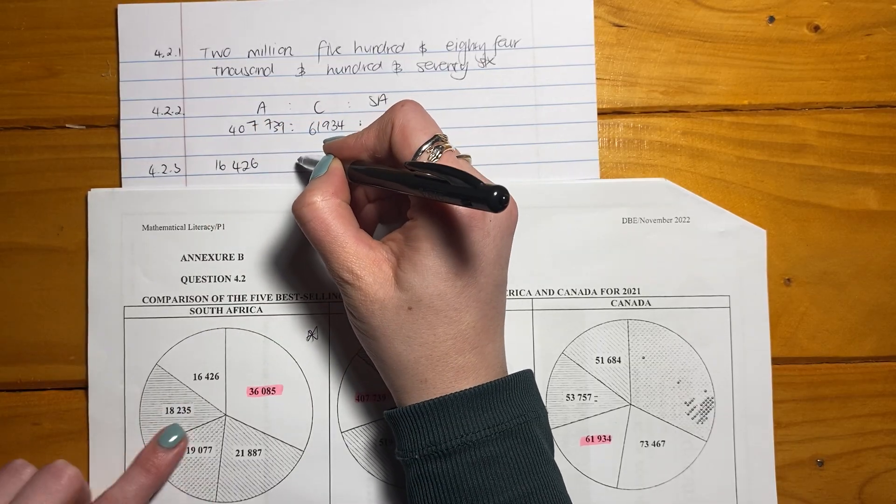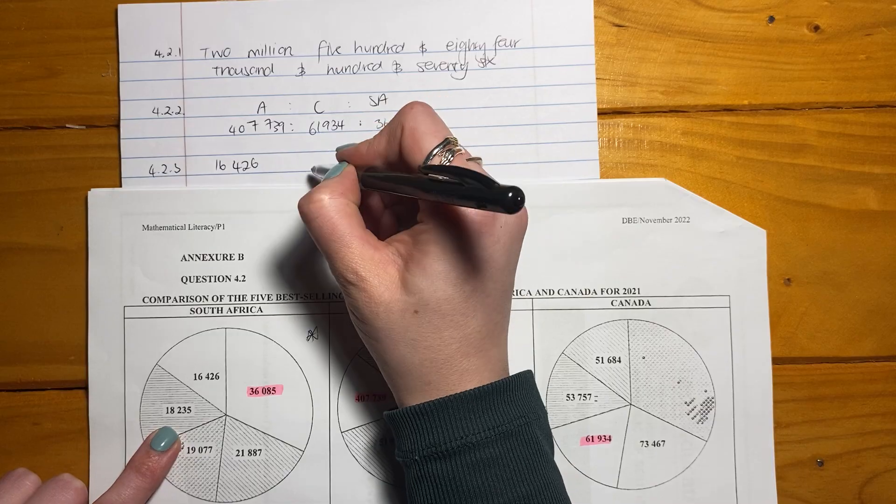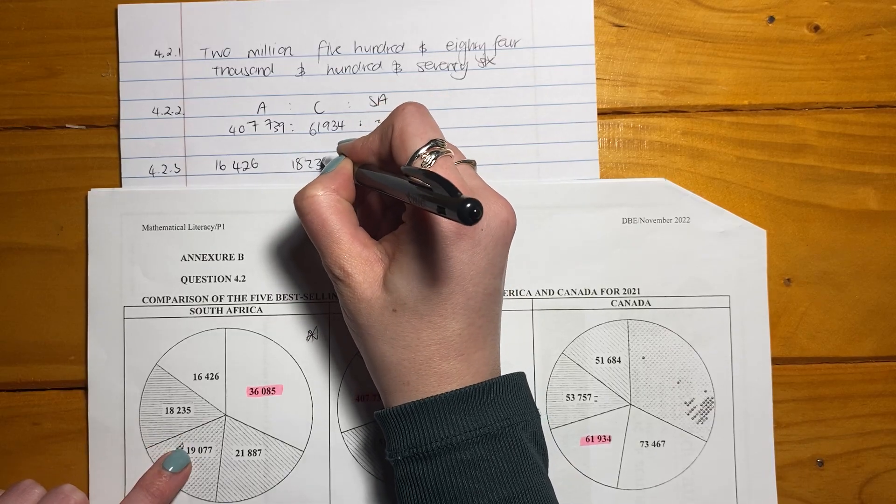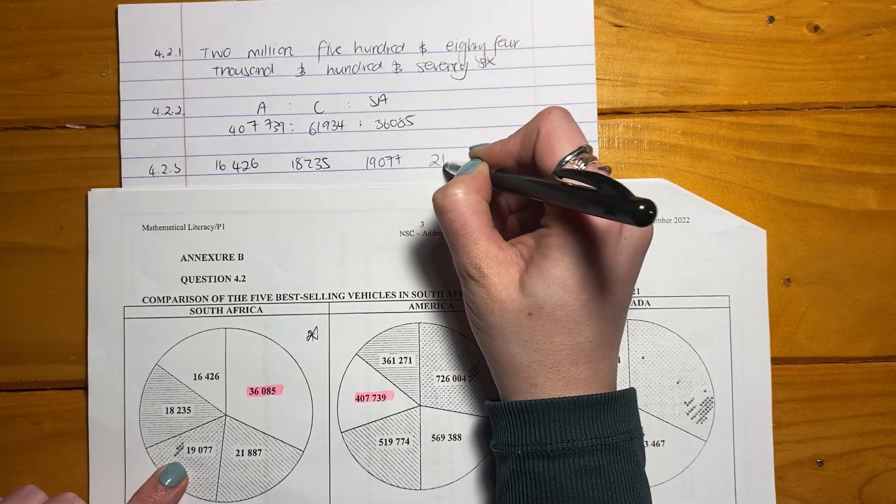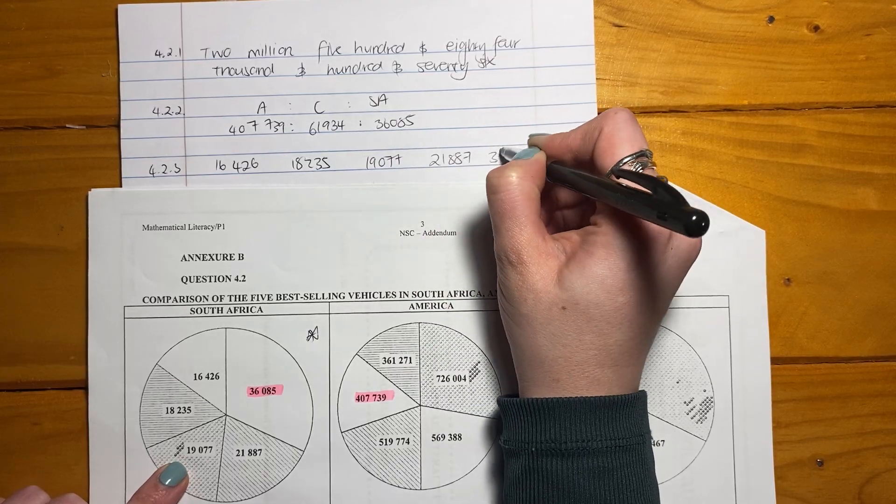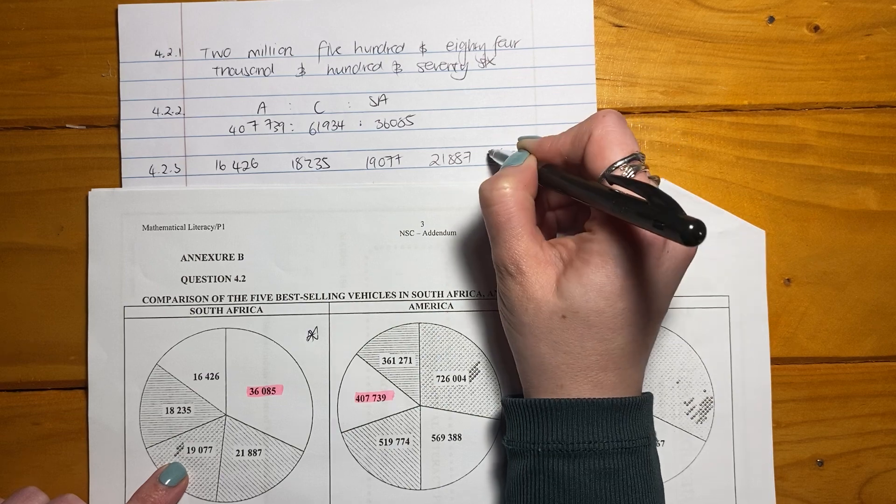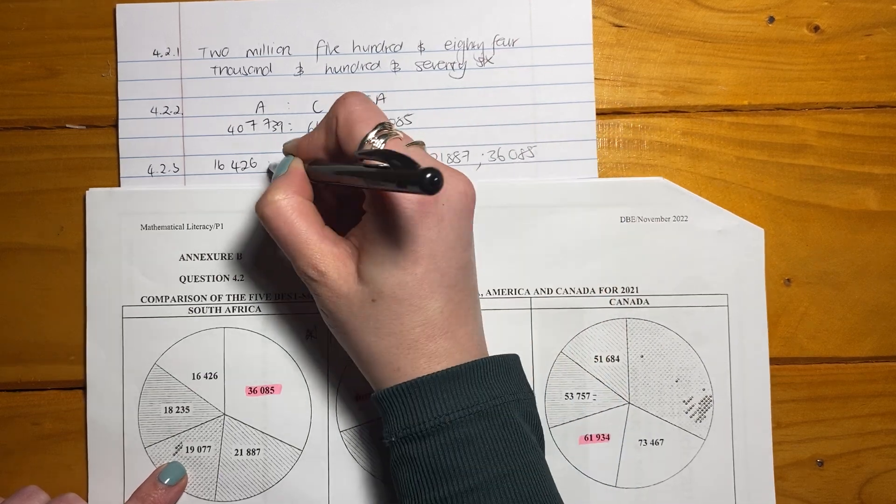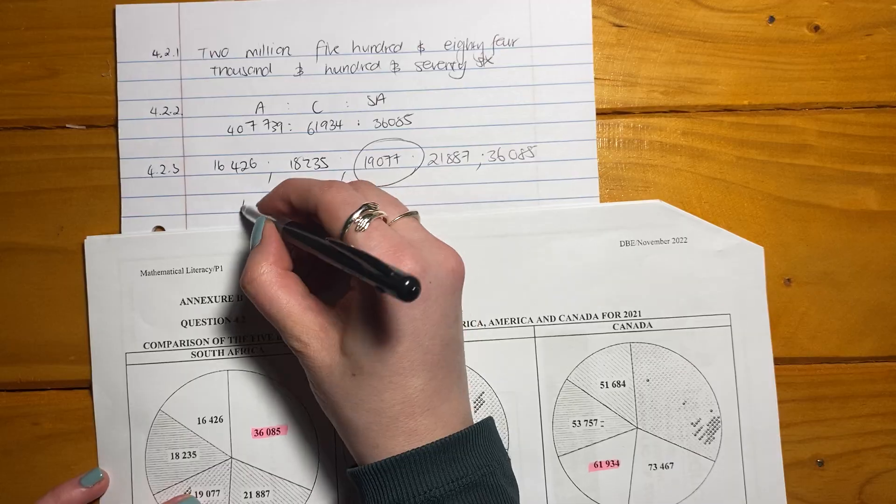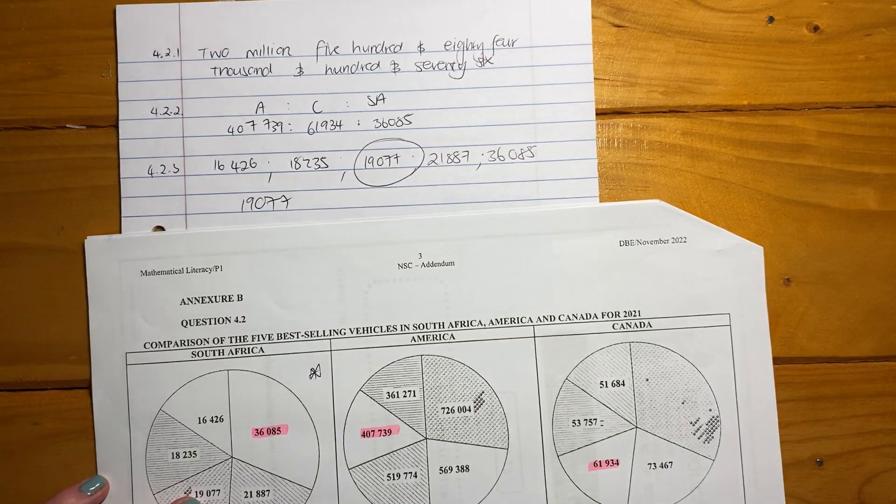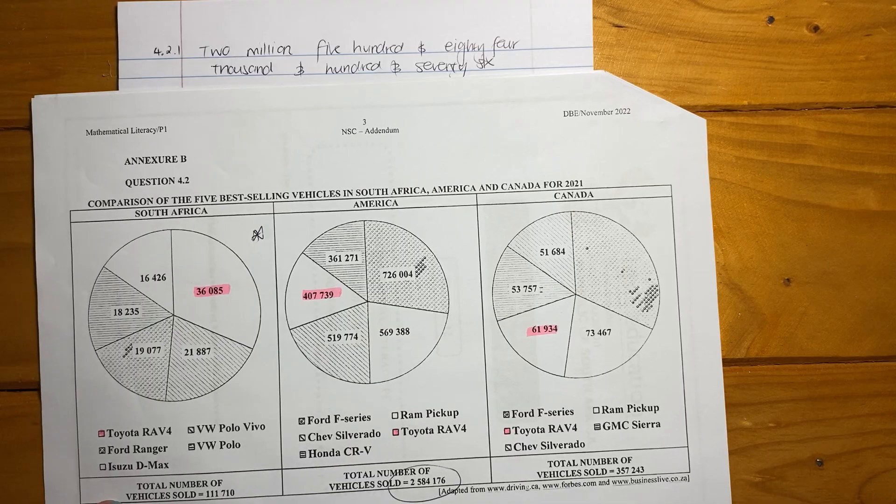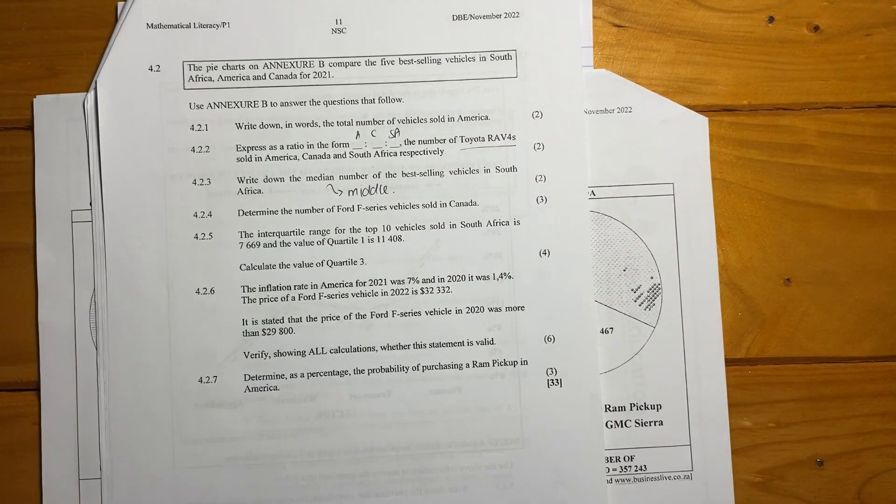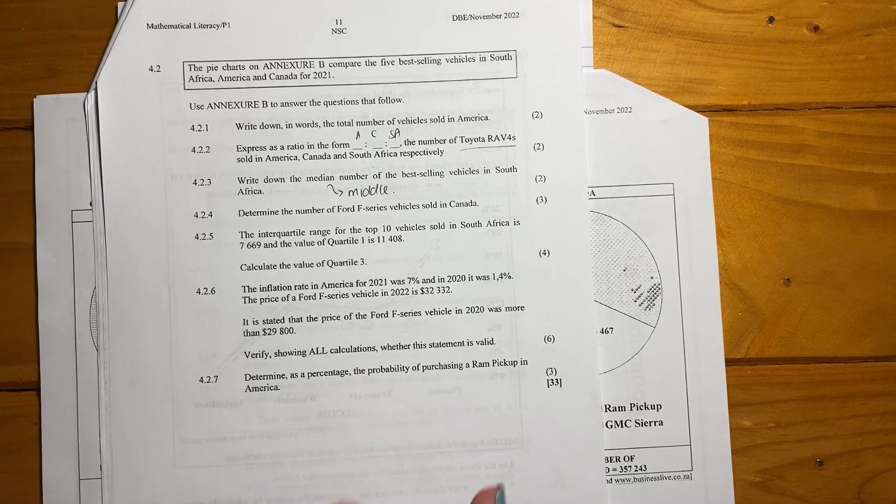So we need to order them first. So what is our smallest? Our smallest number here is 16,426. Then we have 18,235. Then we have 19,077. We have 21,887. So it's actually an anti-clockwise order. There's our five different categories. What's the middle? That's the middle there. So your answer is that, 19,077.